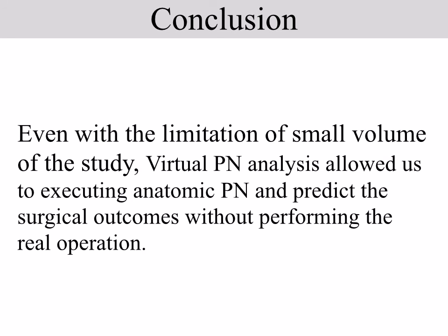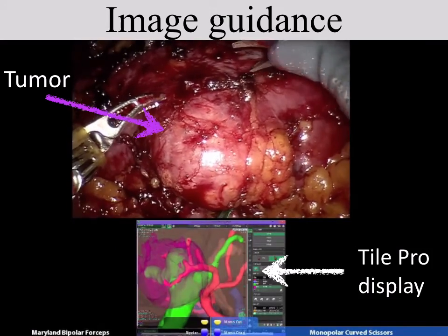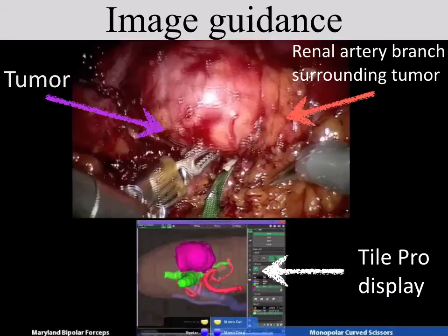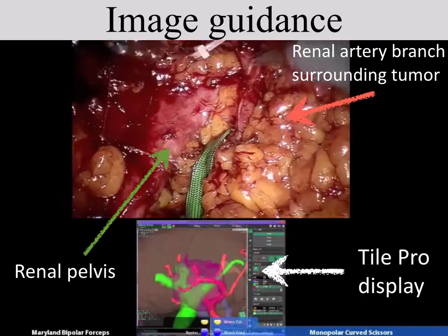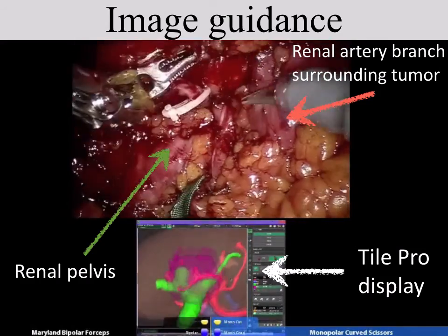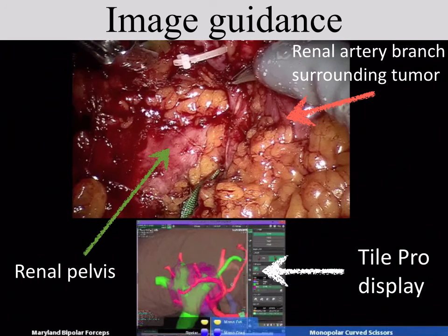Even with the limitation of the small study volume, Virtual PN Analysis allowed us to execute anatomic partial nephrectomy and to predict surgical outcomes without performing the real operation. We are now using this preoperative planning image as image guidance for the robotic surgeon by putting our image into the surgeon console through TilePro. In one case, the tumor was located in the renal hilum, surrounded by the renal artery and renal pelvis. The renal structures were presented as a colored 3D model through the TilePro display in the surgeon console. Before the operation, we planned to dissect the tumor with as thin a margin as possible, just next to the tumor capsule, to prevent opening the collecting system and unnecessary bleeding. In the real operation, our operation plan was carried out successfully with this image guidance.